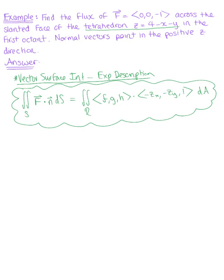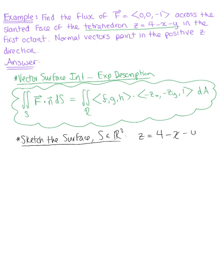The first thing we want to do is sketch the surface S in three dimensions. We have our explicitly defined surface — our tetrahedron — z = 4 - x - y. To start the sketch, we'll find the x, y, and z intercepts. For the z intercept, we let x and y be 0, giving z = 4, so the z intercept is at 4.